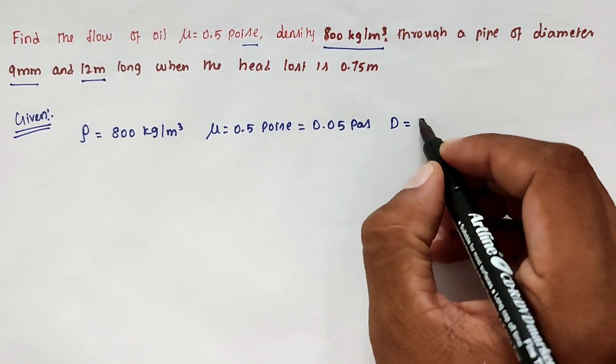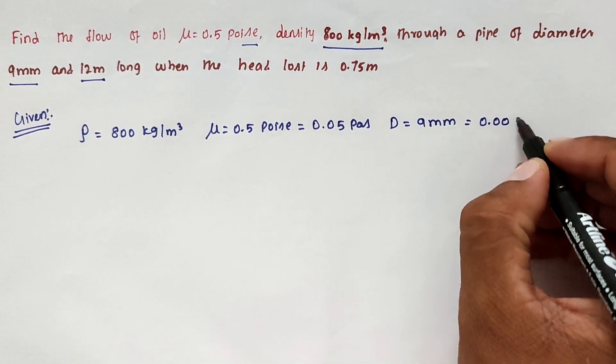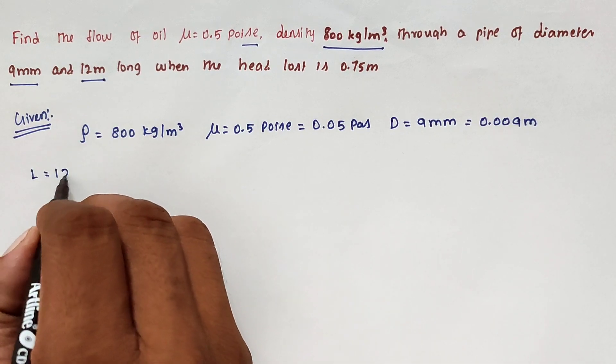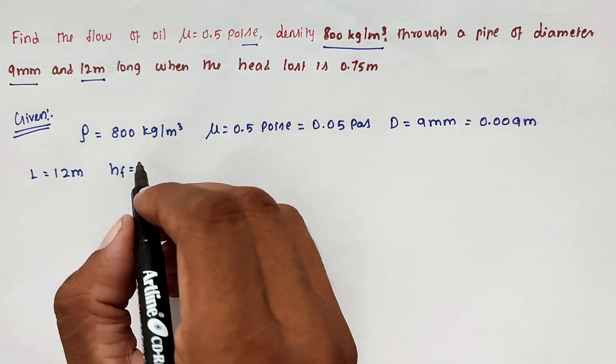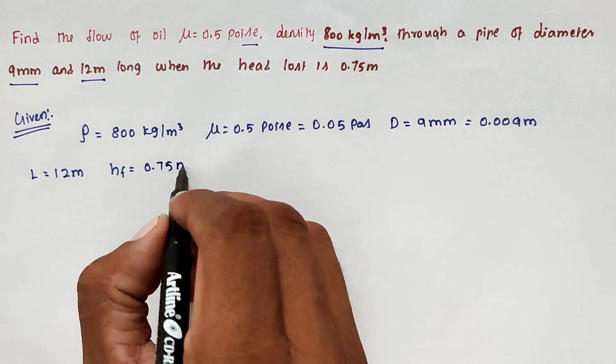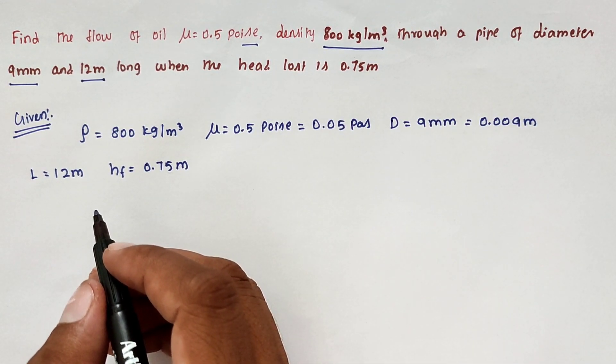Then the given diameter D equal to 9 mm, that is 0.009 meter, then length also given 12 meter, then head loss Hf is given 0.75 meter. We have to find out the velocity that is the flow.